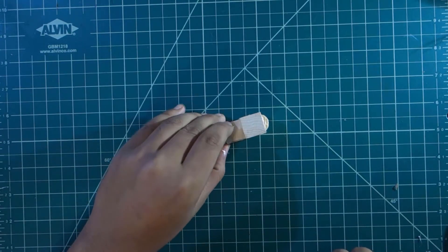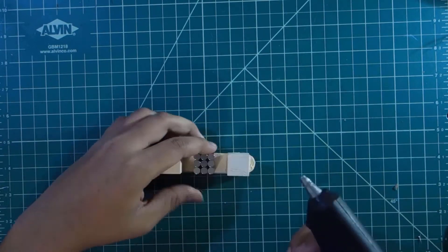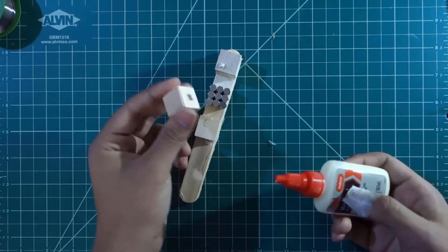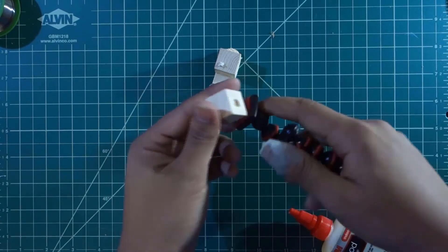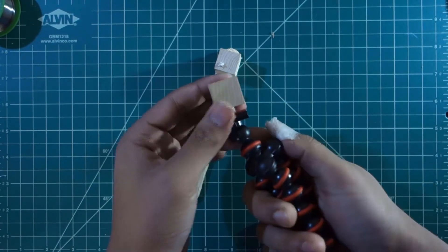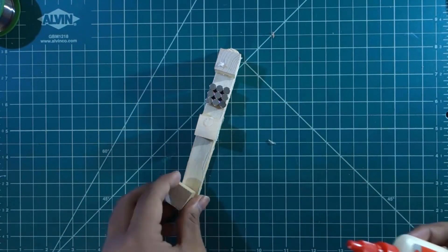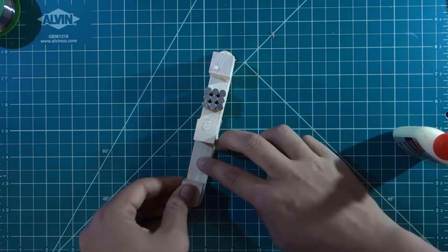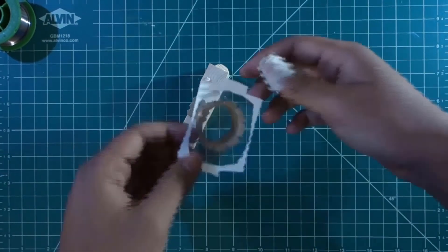Now place two wooden cubes on the crab stick and make sure the distance between them is big enough to fit the diaphragm. Now place a bunch of magnets in between the two cubes.